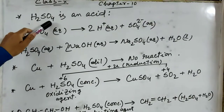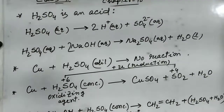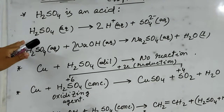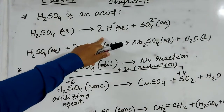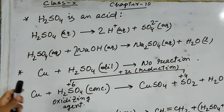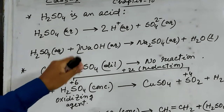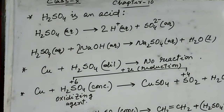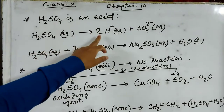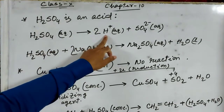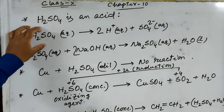H₂SO₄ is an acid. The chemical substances which produce H⁺ ions in aqueous solution are known as acids. Also, chemical substances which react with a base to produce salt and water are known as acids. H₂SO₄ produces a large amount of H⁺ ions in aqueous solution. That is why H₂SO₄ is an acid.